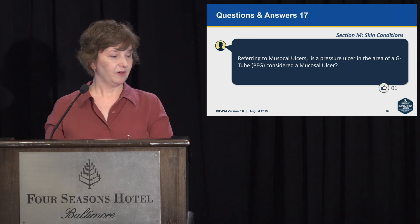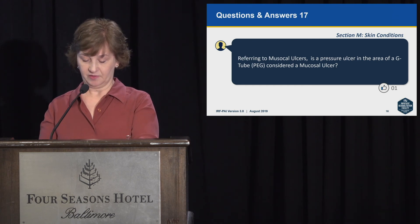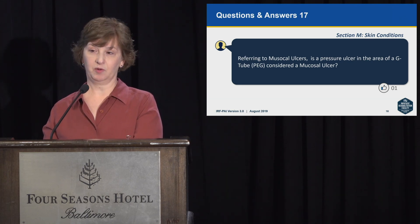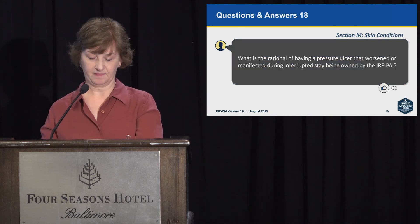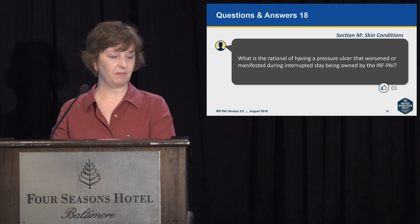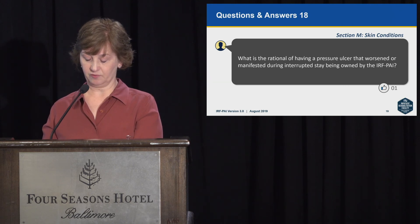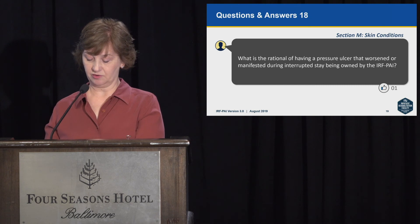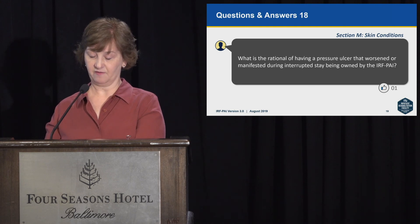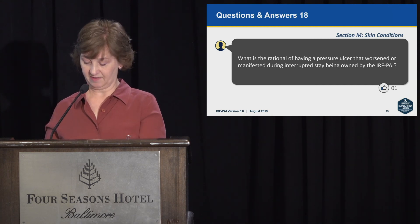Number 17: referring to mucosal ulcers — is a pressure ulcer in the area of a G-tube/PEG considered a mucosal ulcer? The stoma area of the G-tube is considered mucosal, but the skin portion would not be considered mucosal. Number 18: what is the rationale for having a pressure ulcer that worsened or manifested during an interrupted stay being owned by the IRF-PAI? If the patient has an interrupted stay and returns to the IRF with a new pressure ulcer or injury, that pressure ulcer or injury is not considered present on admission. For program interruptions, the two segments of the stay are considered one stay, and when the person returns to the IRF a new assessment is not completed.